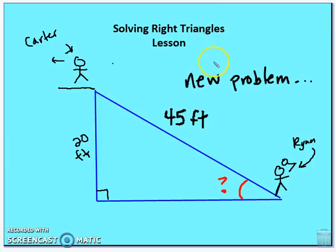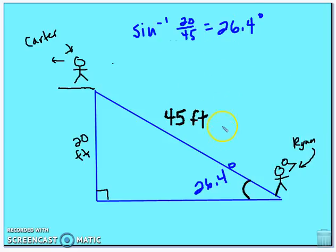For a follow-up problem, find the angle of elevation from Ryan to Carter. Using inverse sine of 20 over 45 gives approximately 26.4 degrees.